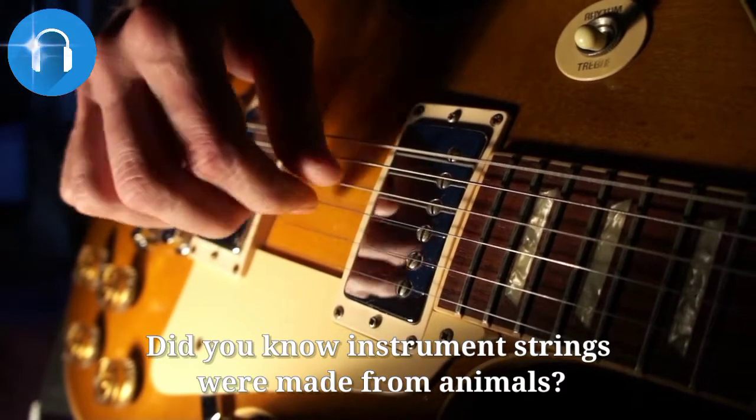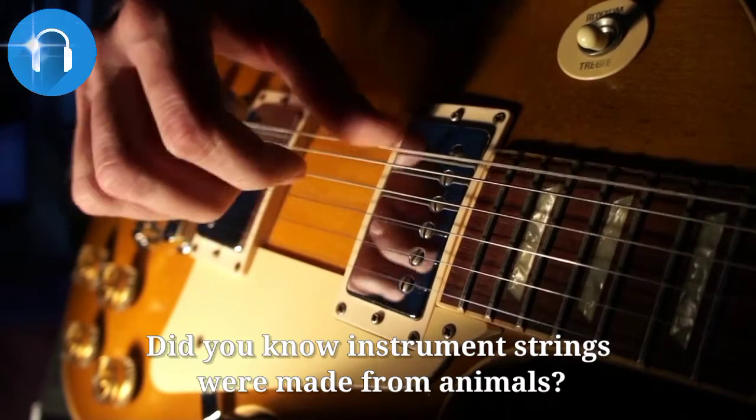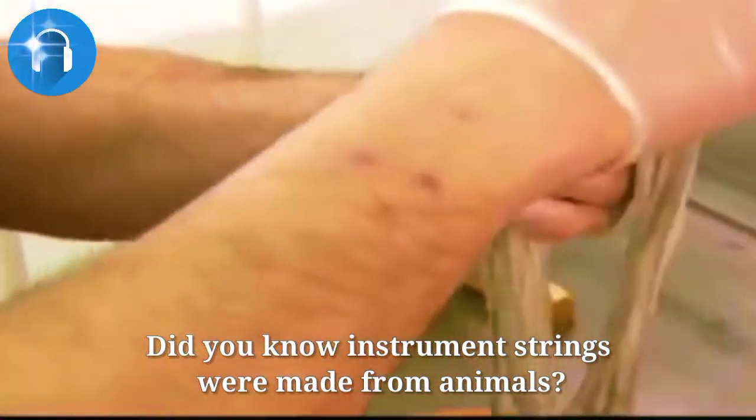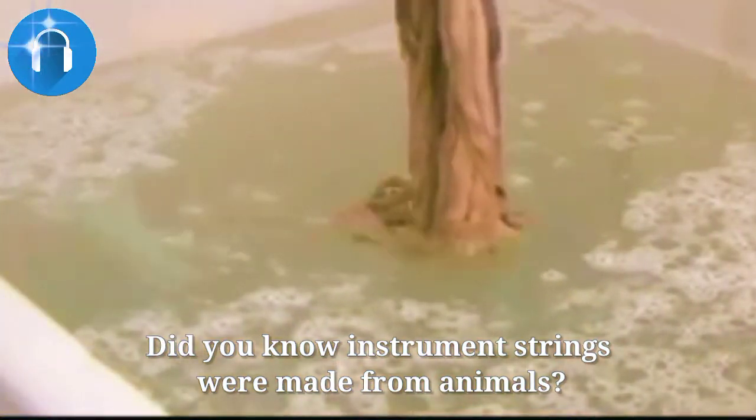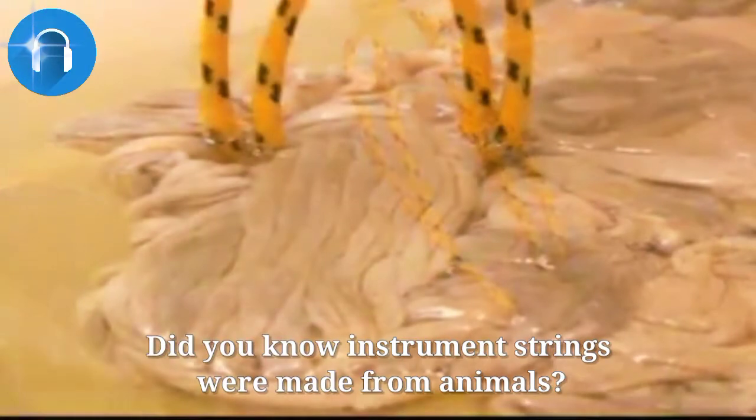But before metal, it was common for all string instruments to be made from the guts of animals geographically available to the makers. Catgut, also known as gut, is a type of cord that is prepared from the natural fiber found in the walls of animal intestines.